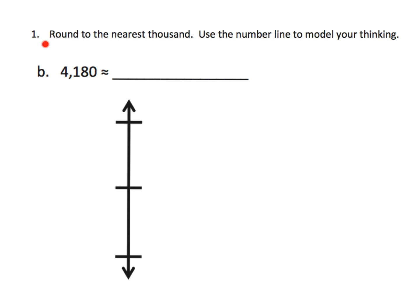The directions say to round to the nearest thousand and use the number line to model your thinking. The first thing I've noticed our fourth graders struggling with is understanding what does the nearest thousand mean. When they look at this number, it's hard for them to see what we mean by a thousand.